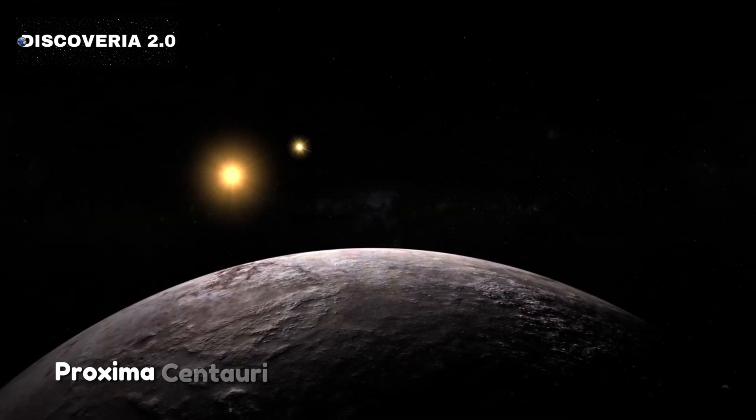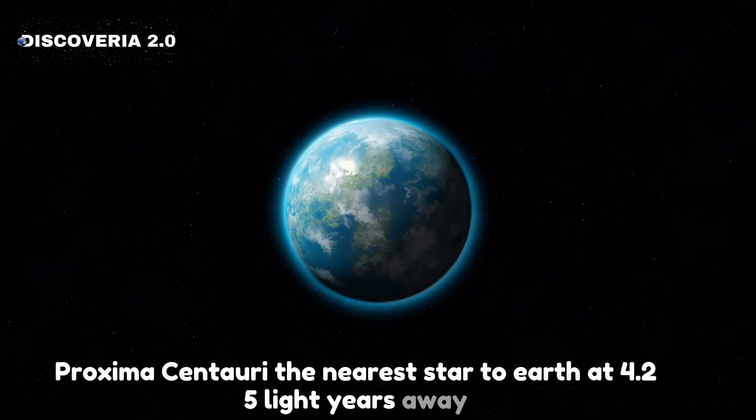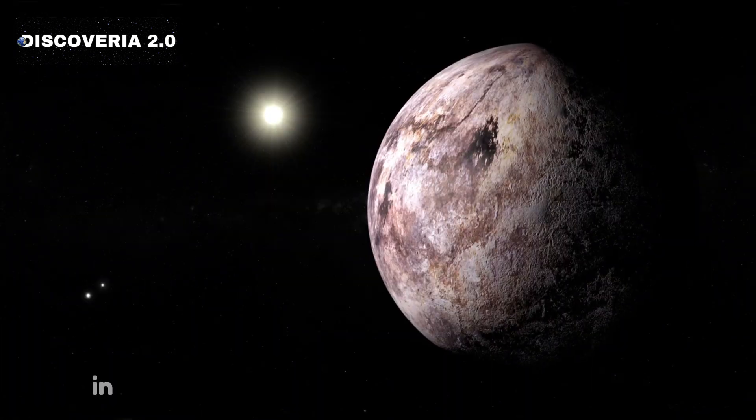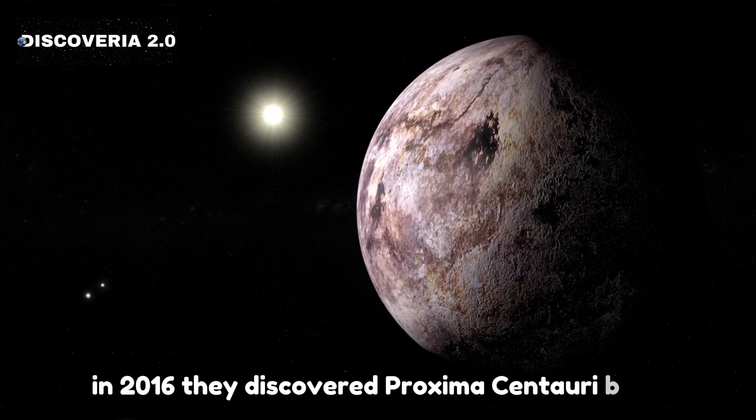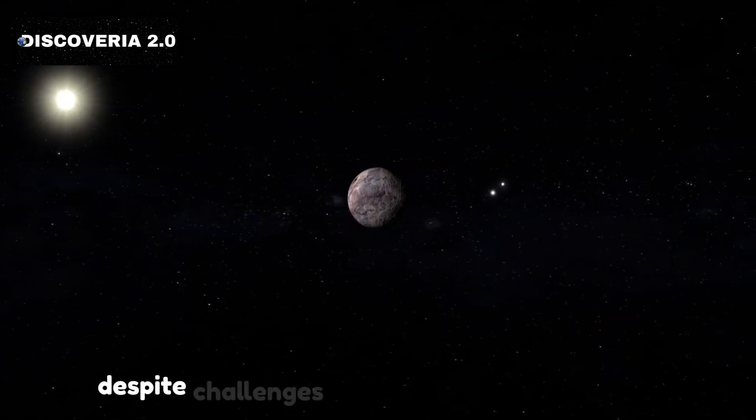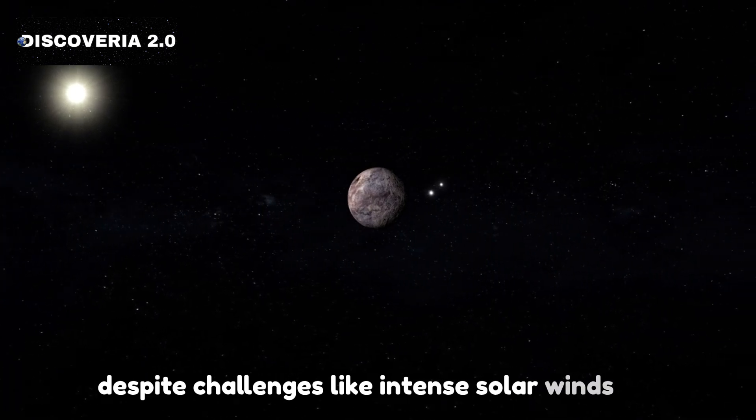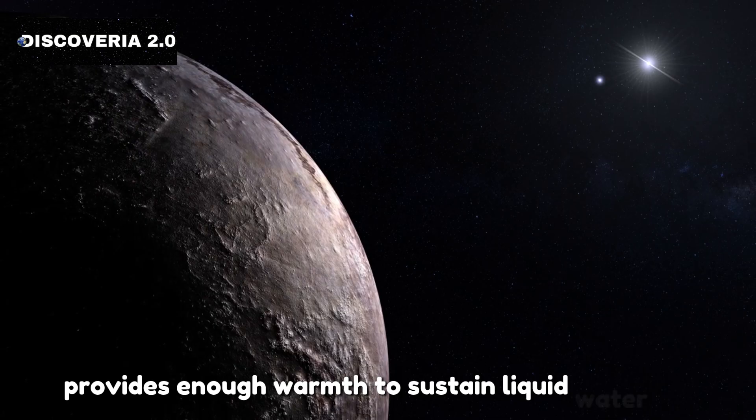Proxima Centauri, the nearest star to Earth at 4.25 light-years away, has captured astronomers' attention. In 2016, they discovered Proxima Centauri b, a planet within the star's habitable zone. Despite challenges like intense solar winds, the planet's close proximity to its star provides enough warmth to sustain liquid water.